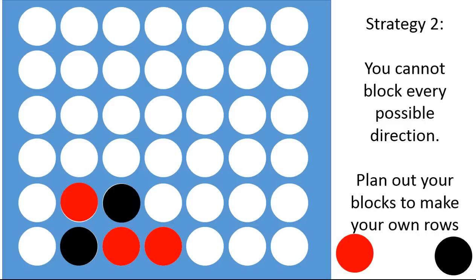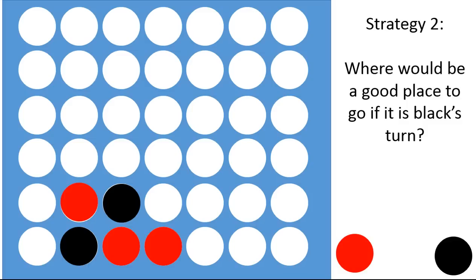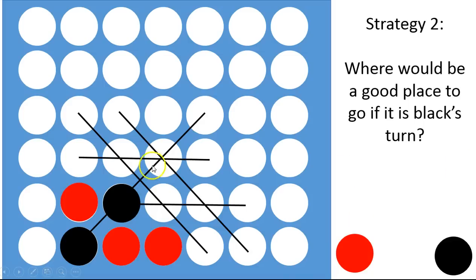So look at the situation we have right here. Red has gone three times, black's gone twice. Where would be a good place for black to go that would help him to block red as well as set up his own lines? A good way to look at that is to think about what lines are possible for black to have.